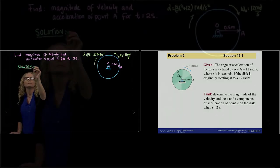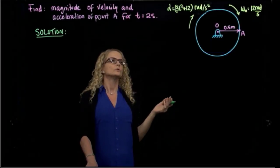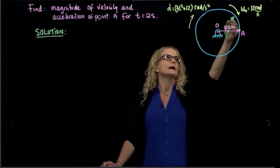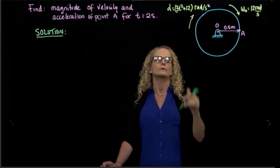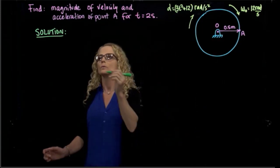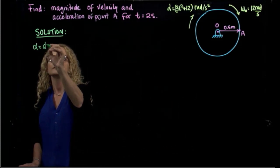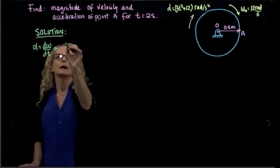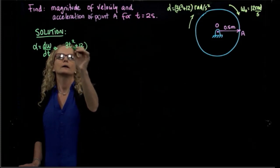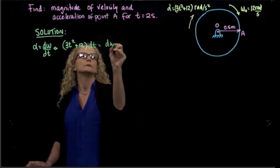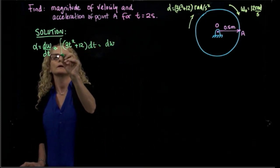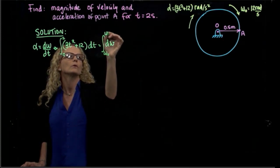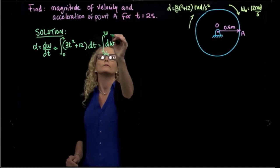The first thing we want to do is find the angular velocity with respect to time, because we have only the initial angular velocity and the angular acceleration with respect to time. We know that angular acceleration is the derivative of angular velocity. So if we have angular acceleration as a function of time, we can integrate both sides from 0 to 2, and from omega_0 to the omega we want to find at 2 seconds.